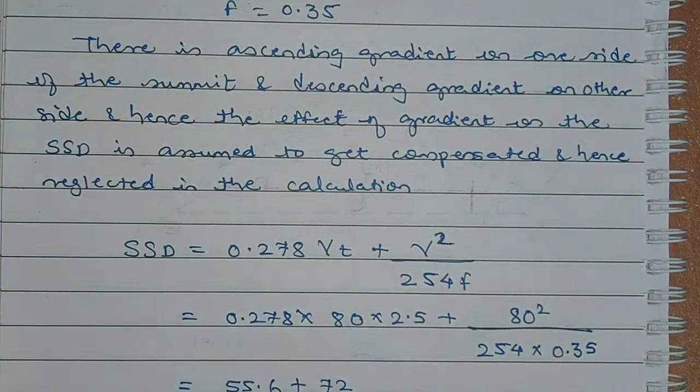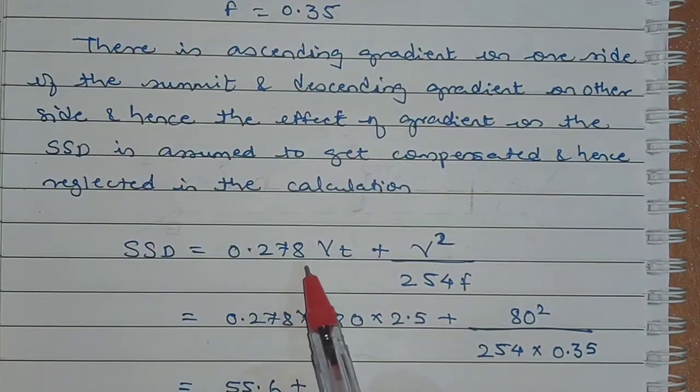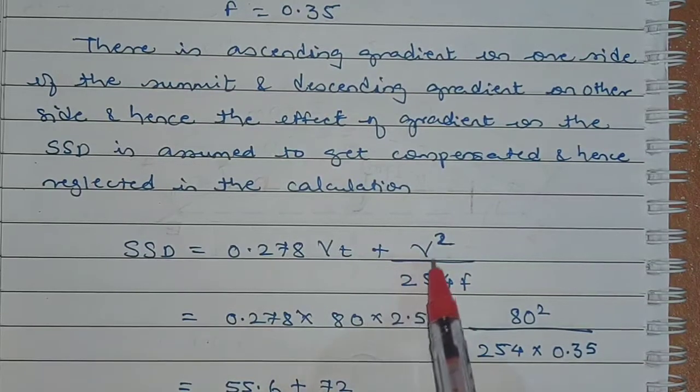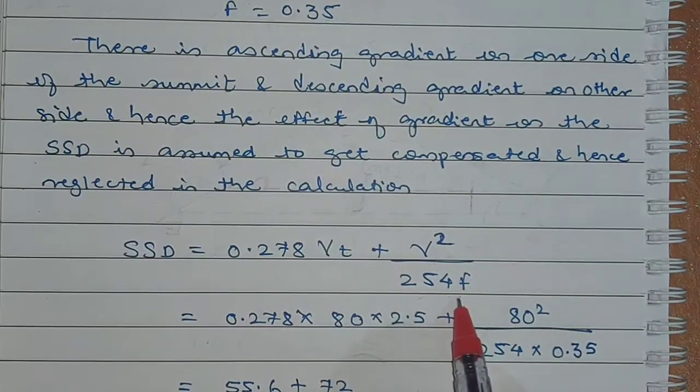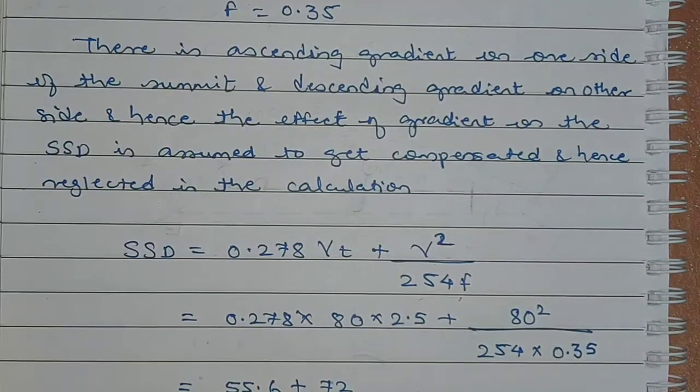The stopping sight distance can be calculated using the formula 0.278 v into t plus v square upon 254 into f. Substituting the values we get 0.278 multiplied by 80 multiplied by 2.5 plus 80 square upon 254 into 0.35.